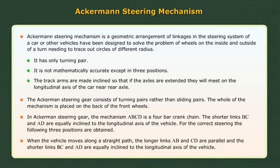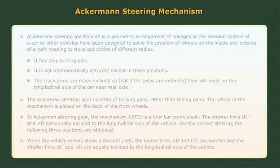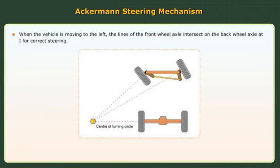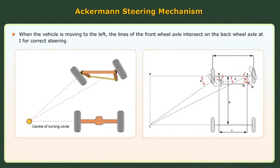When the vehicle is moving to the left, the lines of the front wheel axles intersect on the back wheel axle at point I for correct steering.